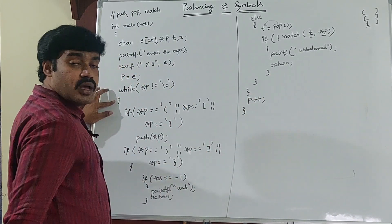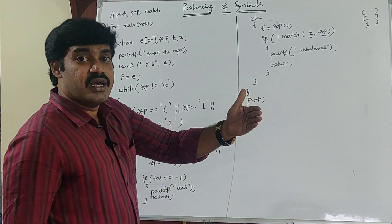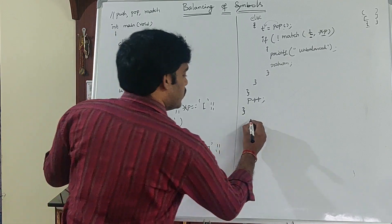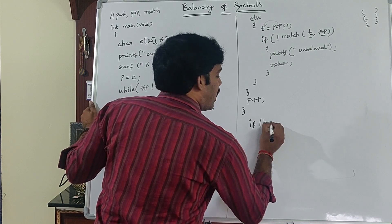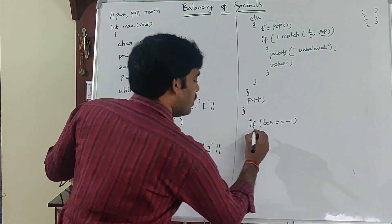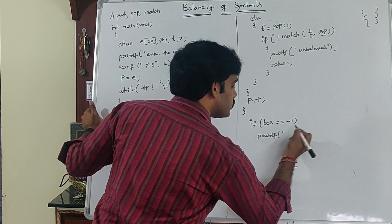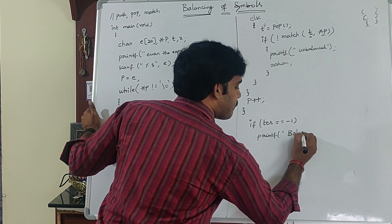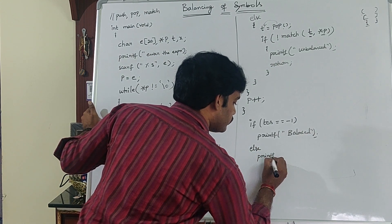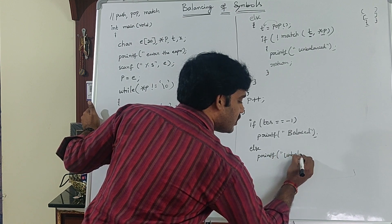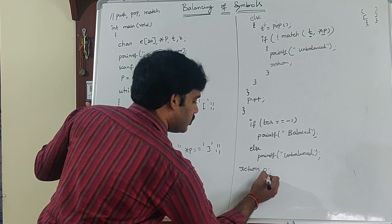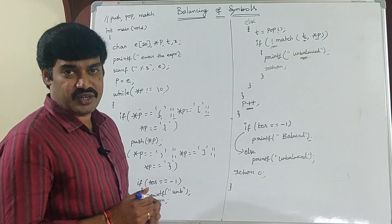After the if block, increment p with p++ to go to the next character, then close the while loop. When the expression ends, if the stack is not empty then it is unbalanced; if the stack is empty then it is balanced. So: if(TOS == -1) printf "balanced", else printf "unbalanced". End with return 0 to close the main function.